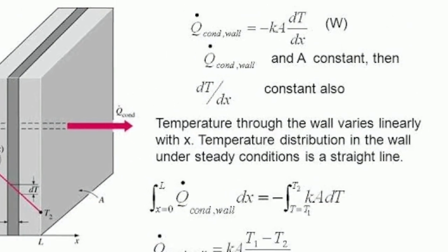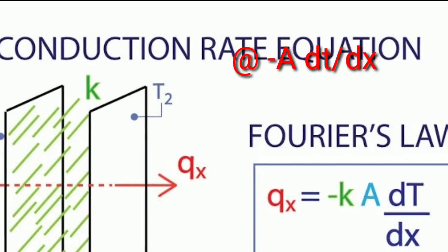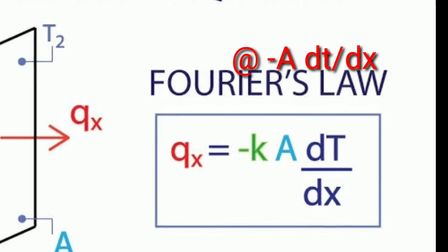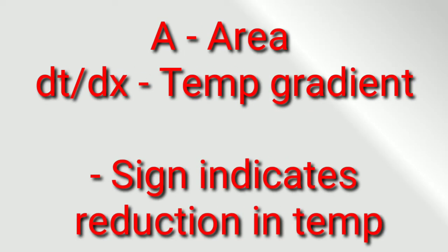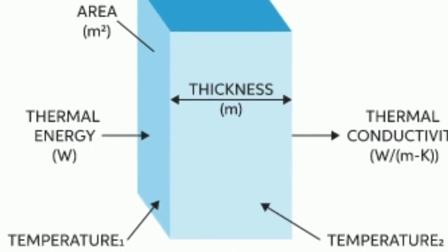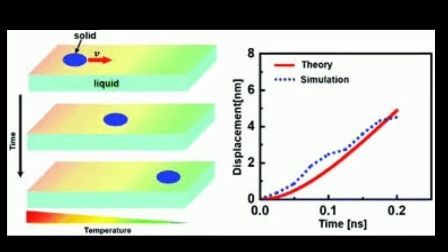The formula is derived. Q is directly proportional to minus A into dT by dx. From this, the temperature gradient relationship gives us Q equal to minus A times the temperature gradient.